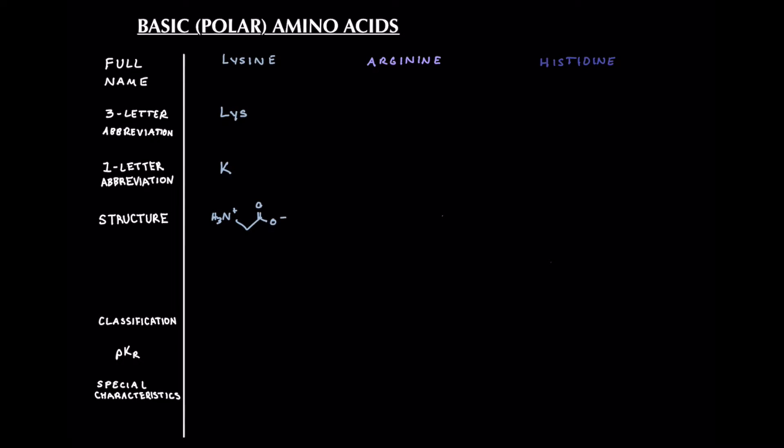So we have one carbon, two carbon, three carbon, four carbons and then attached to that fourth carbon we have an amino group and that amino group is going to be protonated and carry a positive charge. So basic amino acids carry a net positive charge.